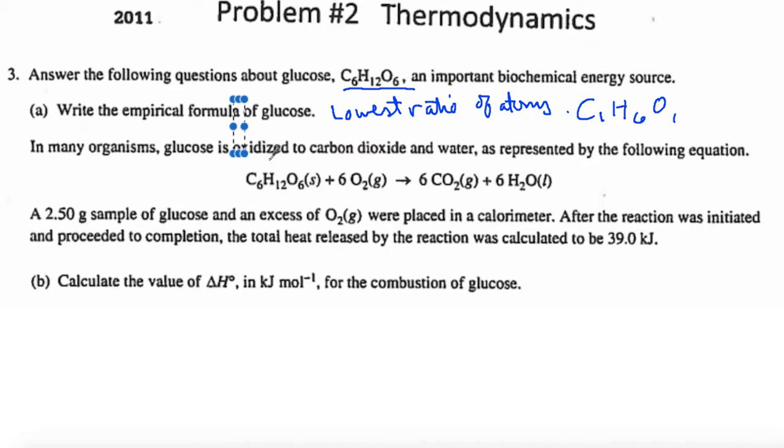In many organisms, glucose is oxidized to carbon dioxide and water as represented by the following equation: C6H12O6 + 6O2 → 6CO2 + 6H2O. Carbon changes its oxidation state. That's why they're saying that. This is what the reaction is.